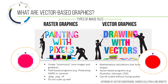One downside of raster graphics is that even though there are really nice tools to edit them, they don't scale up very well if you've ever tried to take a small picture and blow it up. In comparison, vector graphics are mathematical calculations that form shapes. The benefit of using vectors is they can be scaled up or down without losing quality. They're also much more compact file types. Examples of vector-based programs include Adobe Illustrator, Inkscape, and CAD.